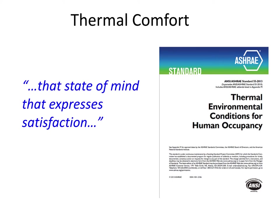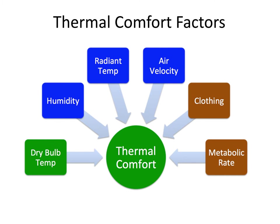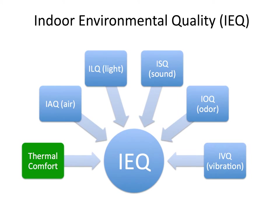When we talk about thermal comfort, we're talking about a range of factors. We have clothing and metabolic rate — those are subjective, nothing you can do about them. The other four are air velocity, radiant temperature (the temperatures of all the surfaces around you that you exchange heat with), humidity, and dry bulb temperature or air temperature. Dry bulb is the one we go to when we're uncomfortable — we adjust the thermostat — but that's just one factor among many that control thermal comfort.